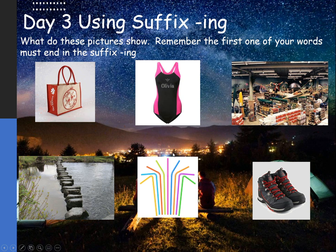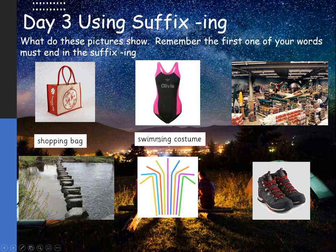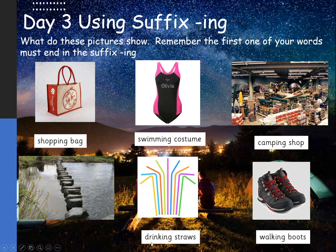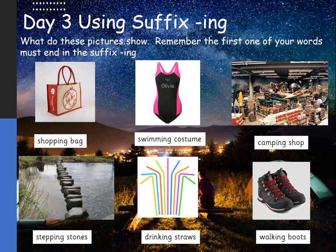What I want you to do now is have a look at these pictures and try to write two words describing them. Think about it — the first word should start with the suffix -ing. Grown-ups, when you've had a go, do feel free to chat over the words with your family and children. When you're finished, start the video again and have a look at what I thought. The first one: shopping bag. Number two: swimming costume. Number three was quite tricky but I think it's a camping shop. Number four: walking boots. Number five: drinking straws — but you could have crafting straws as well. And the last one: stepping stones. Have a think — you can look out for other words that use those -ing descriptors.